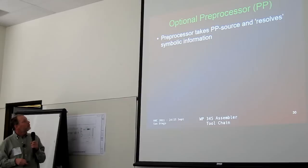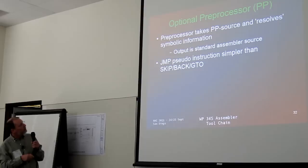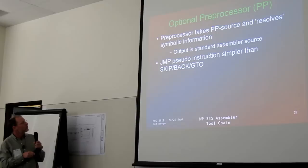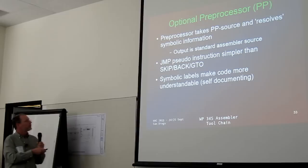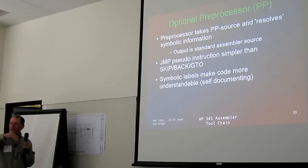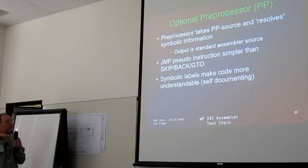This is a preprocessor feature added quite late in the process. Its output is standard assembly language that goes into the assembler. The calculator has, for looping, two back and skip instructions that skip a number of steps, or a go-to that goes to a specific label. This tool lets you replace all of those with a jump statement, and it figures out what the back count had to be or how many steps forward or back to skip.